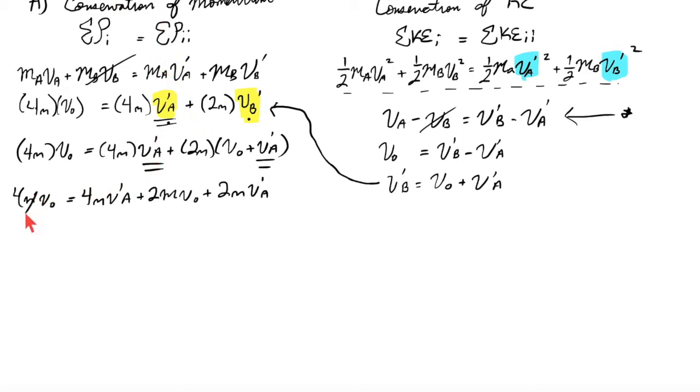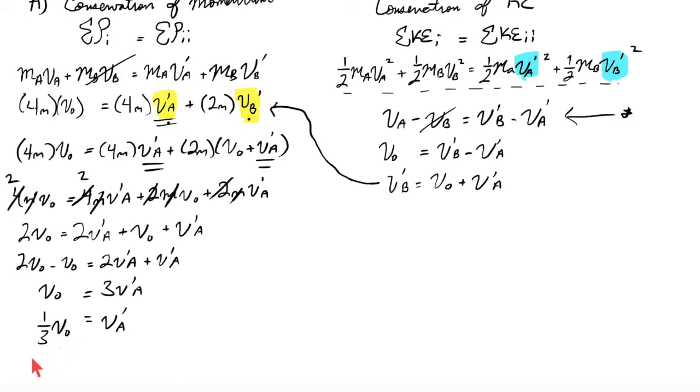let's just do a little bit more algebra to finally solve for V prime of A. 4M V0 is equal to 4M V prime of A, distributing, plus 2M V0 plus 2M V prime of A. At this point, I could notice that M appears in every single term. Cancel it out. If you want, I could even go ahead and do this. Multiples of 2 appear in every single term. So I could go ahead and cancel all of these, or replace these with 2s. All right, now I have 2V0 equals 2V prime A plus V0 plus V prime A.